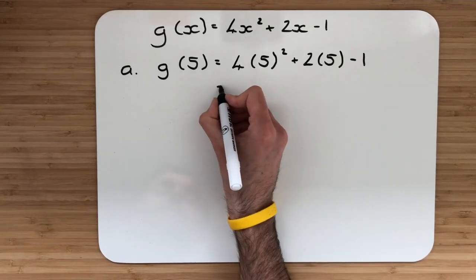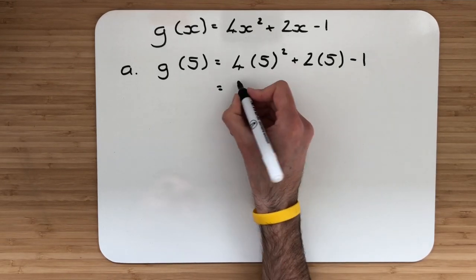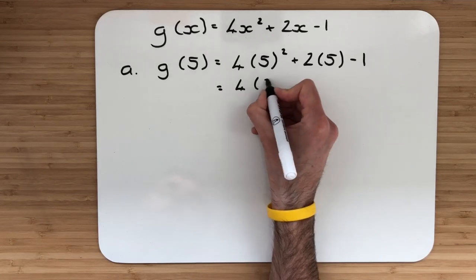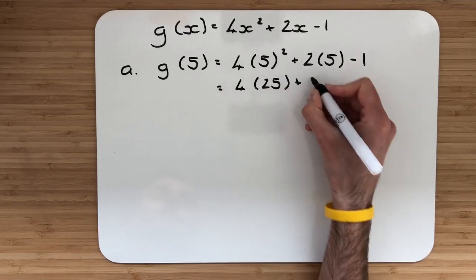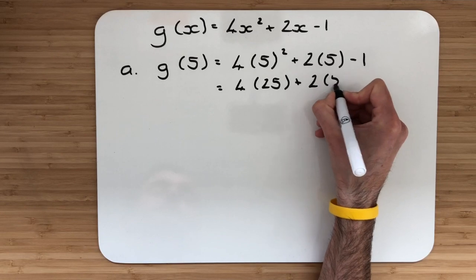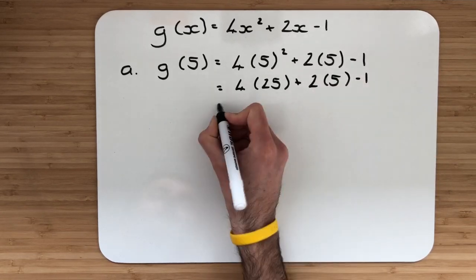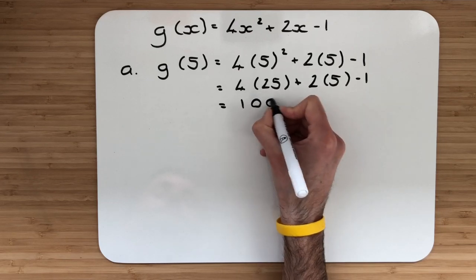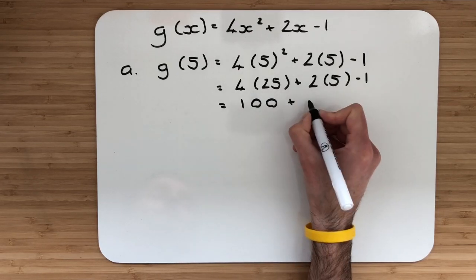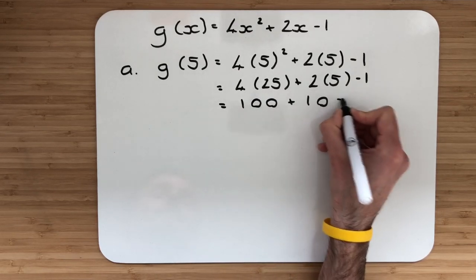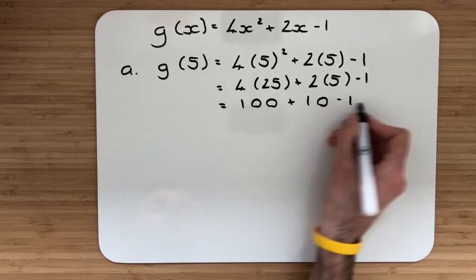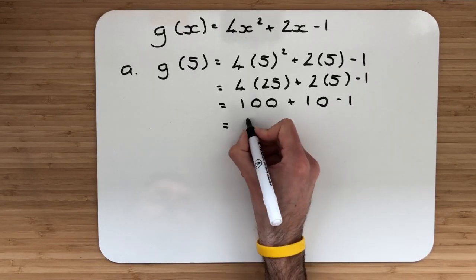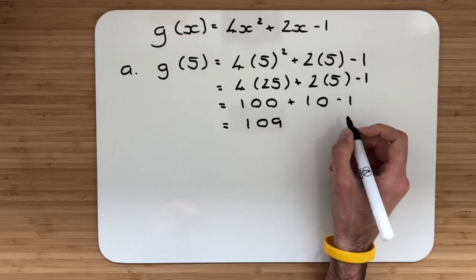We're going through the rules of BIDMAS here. So in this instance, we'll square first of all. So I have 4 multiplied by 25, and then that's just going to stay the same for just now. So 4 multiplied by 25 will be 100. Adding on 2 multiplied by 5 is 10. Then subtract the 1. Go left to right, and from here we have a final answer of 109.